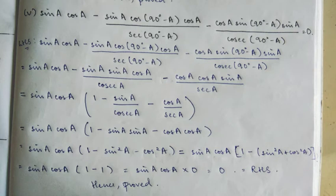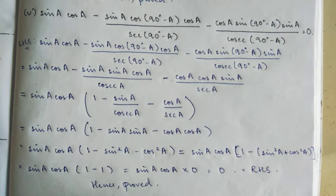Okay, so next step: we have sin A cos A open bracket 1, so that's sin A divided by cos A, with cos A as the denominator. At the numerator we have sin A. So that's the third term with cos A. Then it will be sin A multiplied giving sin square A, and cos A multiplied giving cos square A.